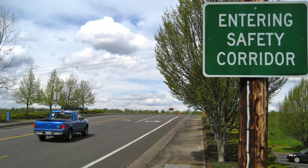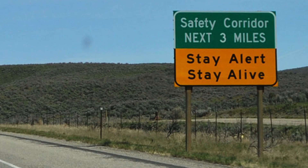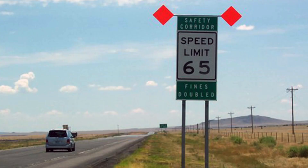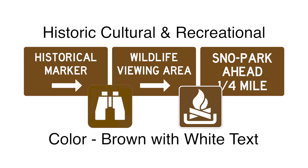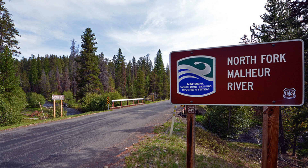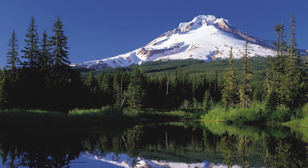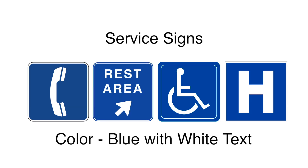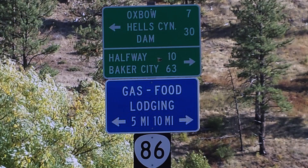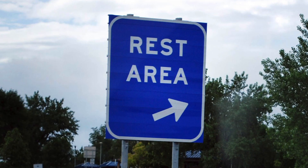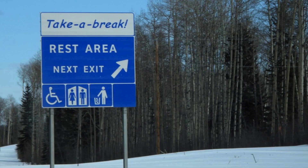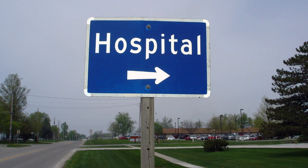Safety corridors are designated stretches of highway with more fatal and serious injury crashes than the statewide average. Turn on your lights for safety. Signs identifying safety corridors may include diamond-shaped flags. Historic, cultural, and recreational signs: These brown signs point to historic and cultural locations, as well as scenic areas, picnic grounds, and parks. Motorist service signs: These blue signs tell you about services or facilities along the highway — they may indicate gas, food, and lodging at the next exit, a rest area ahead, a phone, accessible parking or facilities for persons with disabilities, or the road to a hospital.